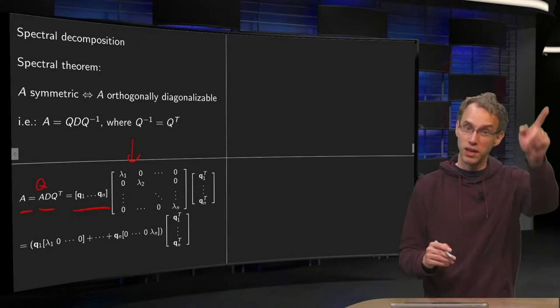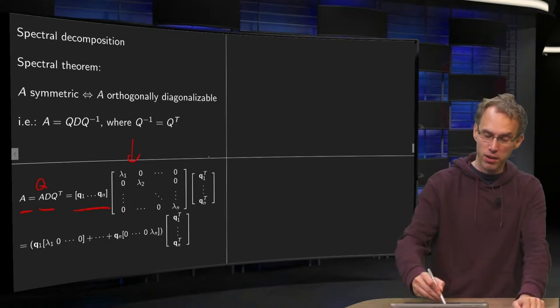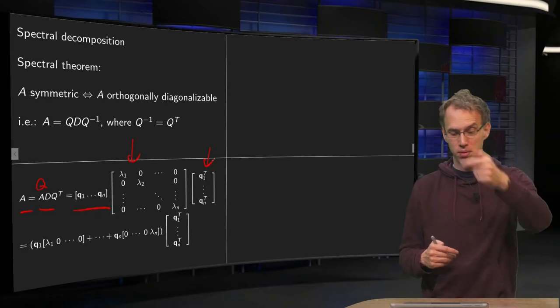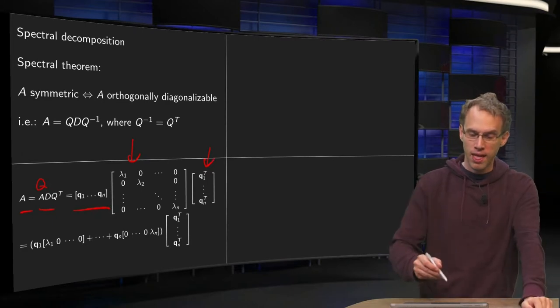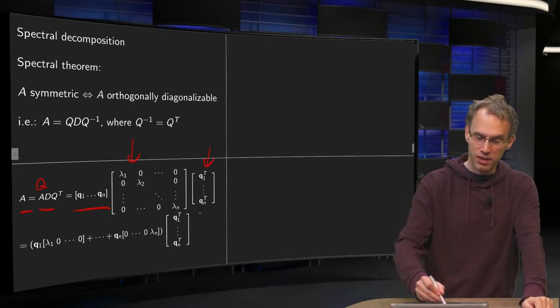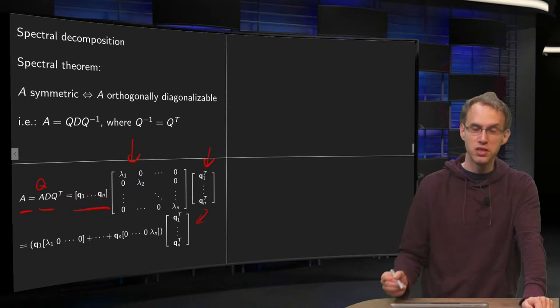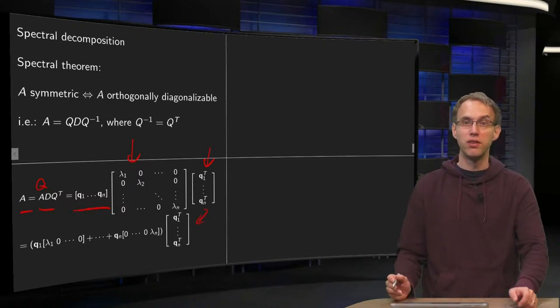D is a diagonal matrix with the eigenvalues on the diagonal. And your matrix Q transpose with again eigenvectors but now transposed. Now we leave this matrix here as it is and we are going to manipulate the first product.